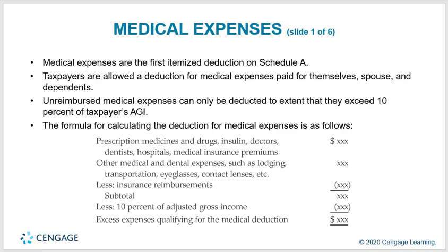Medical expenses are the first items deducted on Schedule A, which is used for itemized deductions. Taxpayers are allowed a deduction for medical expenses paid for themselves, their spouse, and dependents. Unreimbursed medical expenses can only be deducted to the extent they exceed 10% of the taxpayer's AGI.